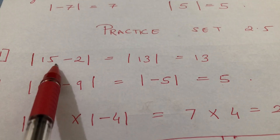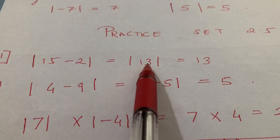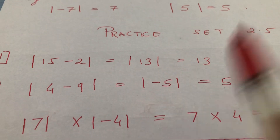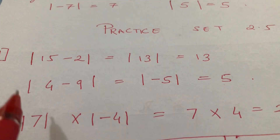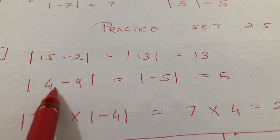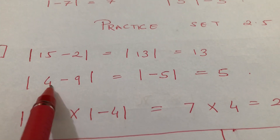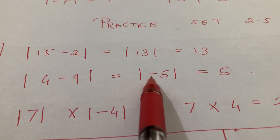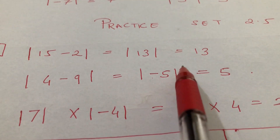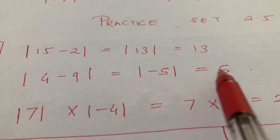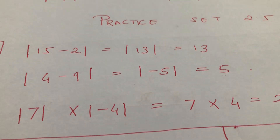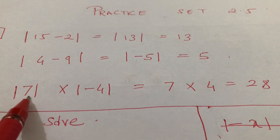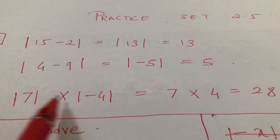We will move towards the exercise. Mod of (15 minus 2): 15 minus 2 is 13, and mod of 13 is 13 itself. Next, mod of (4 minus 9): 4 minus 9 is minus 5, so mod of minus 5 is 5.